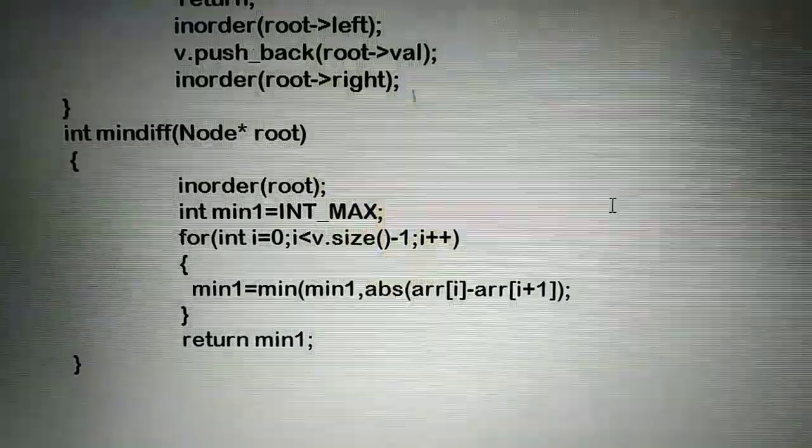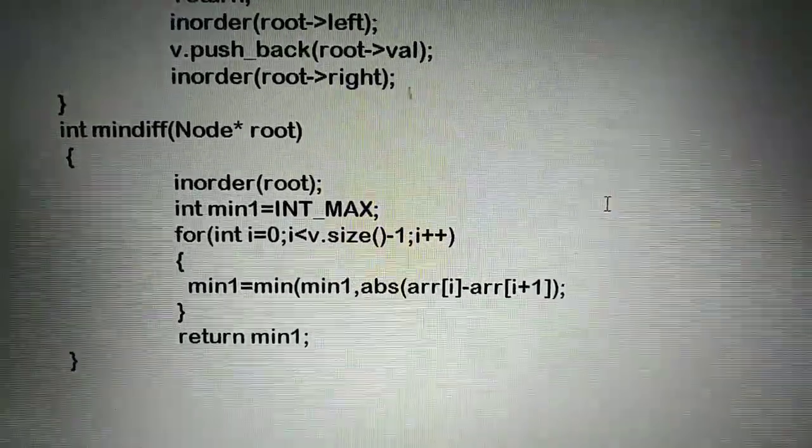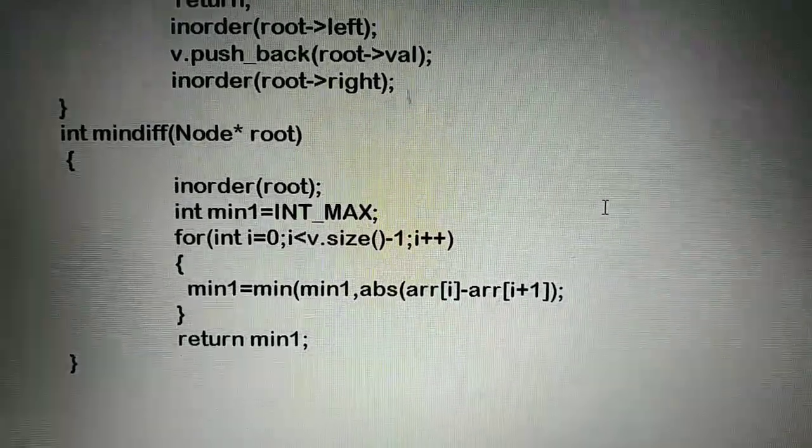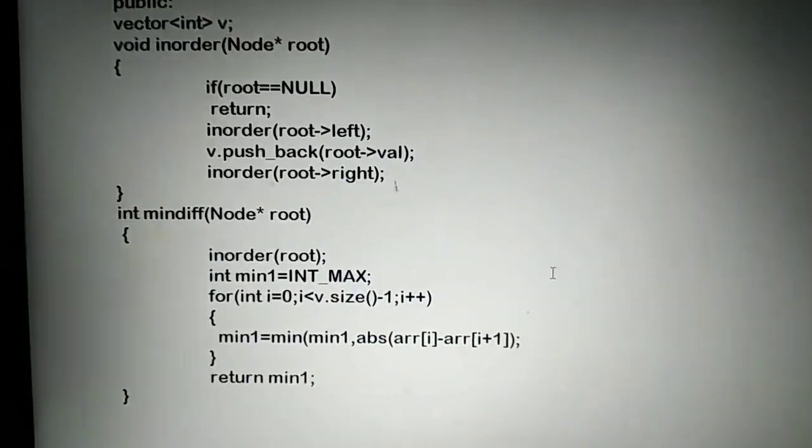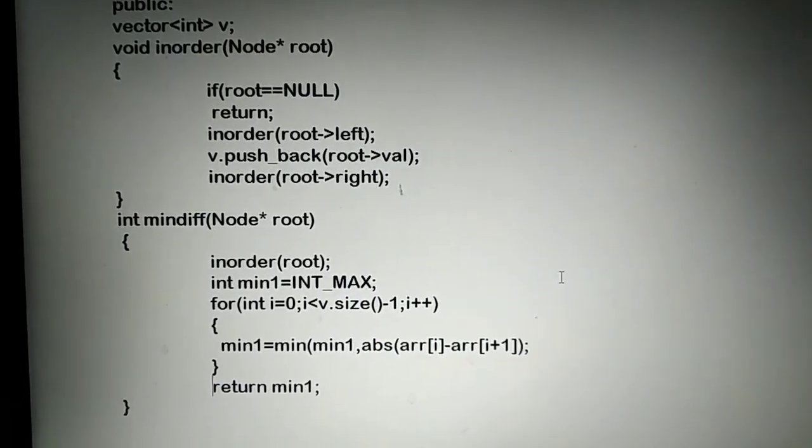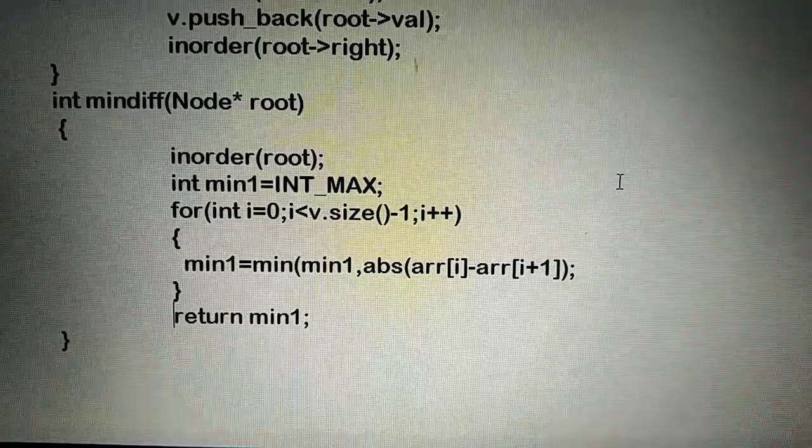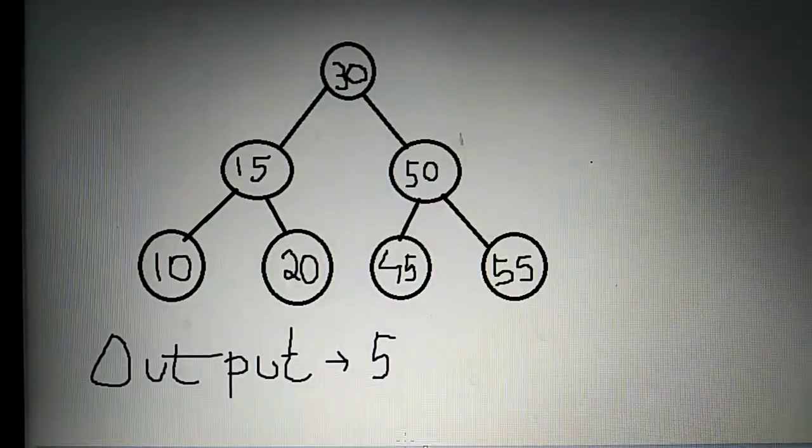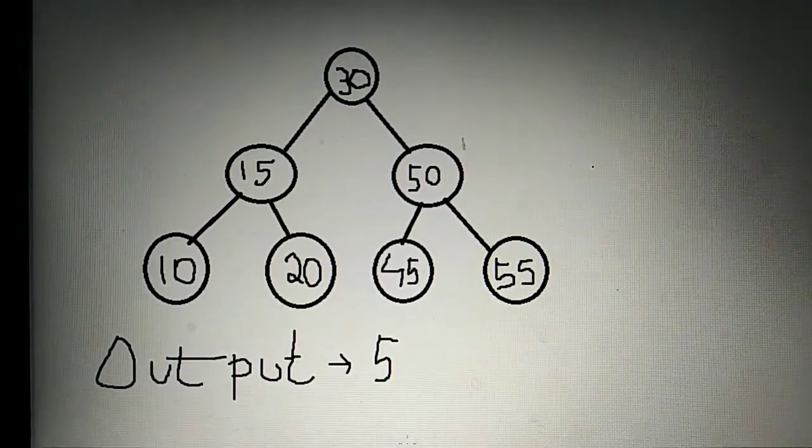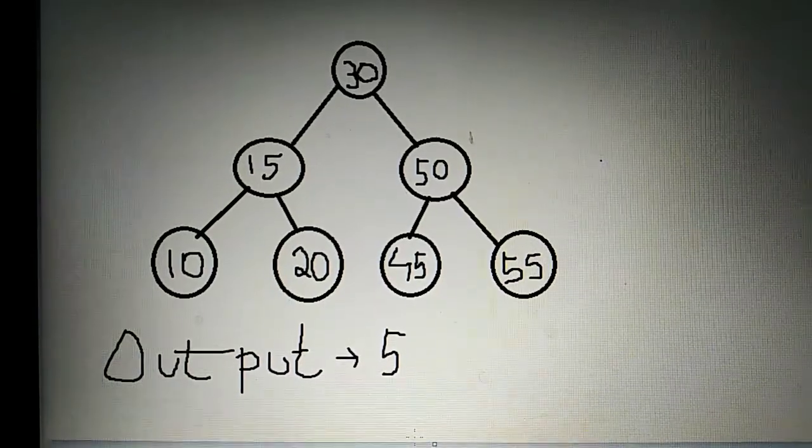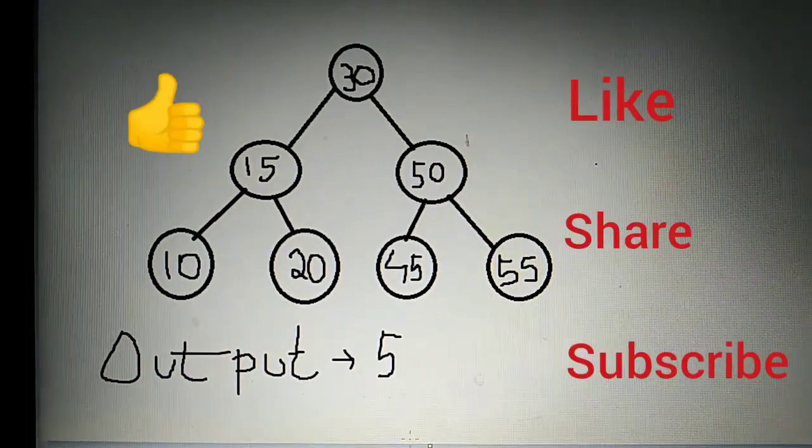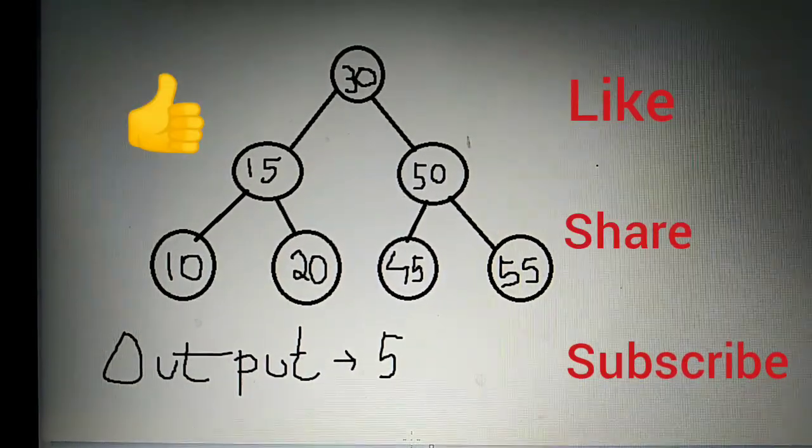this function stores the absolute differences between adjacent elements of the vector V. Finally, we return minimum. So the output of this function is 5. Hope you enjoy this video, please like, share, and subscribe.